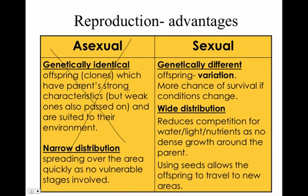Sexual reproduction involves two parents, and the offspring look a little bit different — there's variation. This gives a greater chance that they're going to survive when conditions change. However, this kind of reproduction takes time.